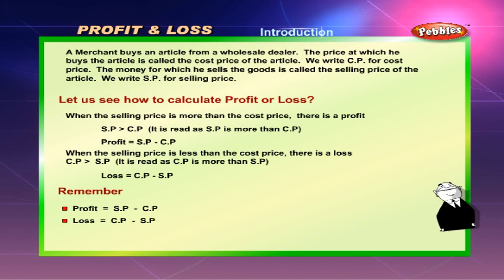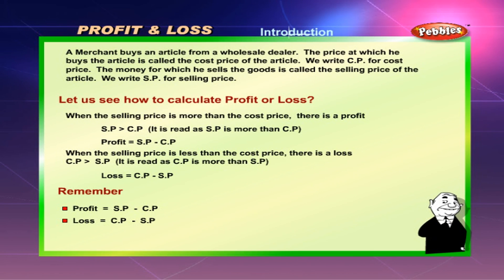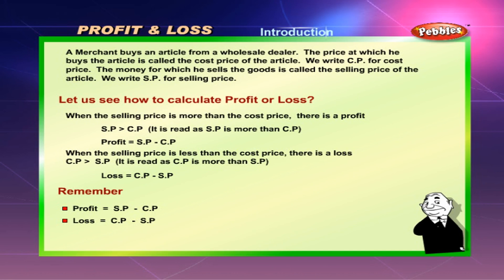Profit and loss introduction. A merchant buys an article from a wholesale dealer. The price at which he buys the article is called the cost price of the article — we write CP for cost price. The money for which he sells the goods is called the selling price of the article — we write SP for selling price.